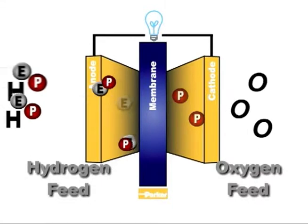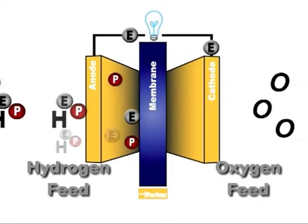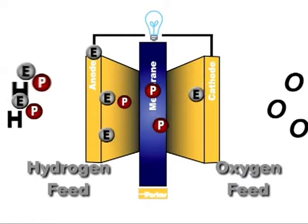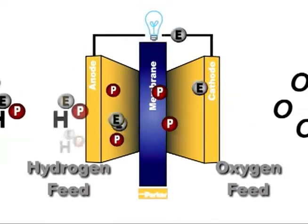Electrons, which cannot pass through the membrane material, are forced to flow outside of the fuel cell and through a load, such as a light bulb, before returning to the cathode, or oxygen side, of the fuel cell.